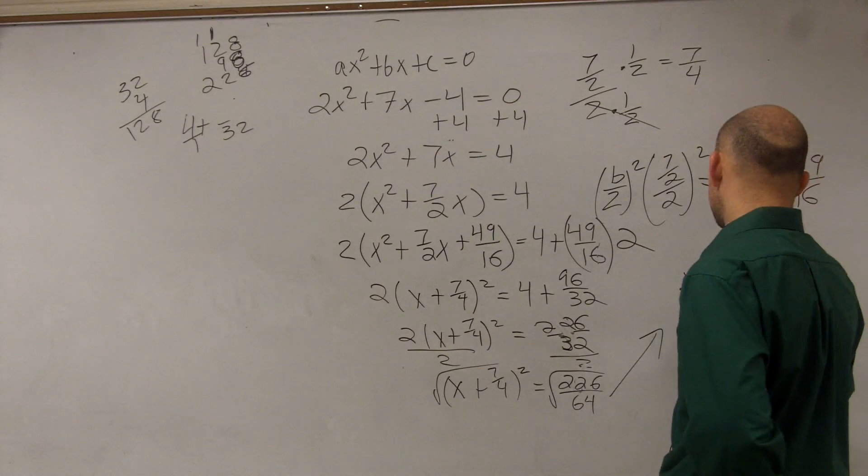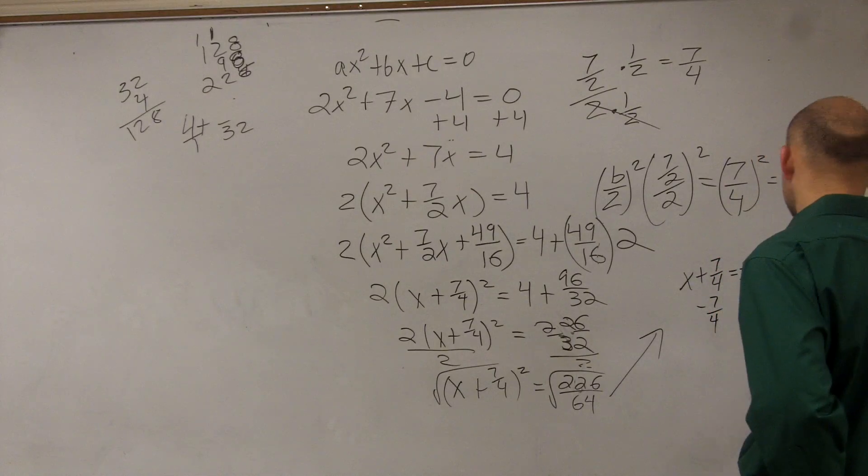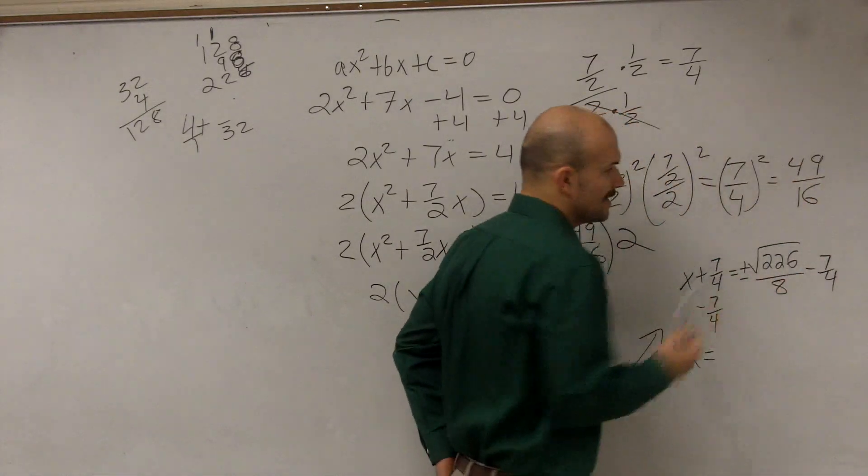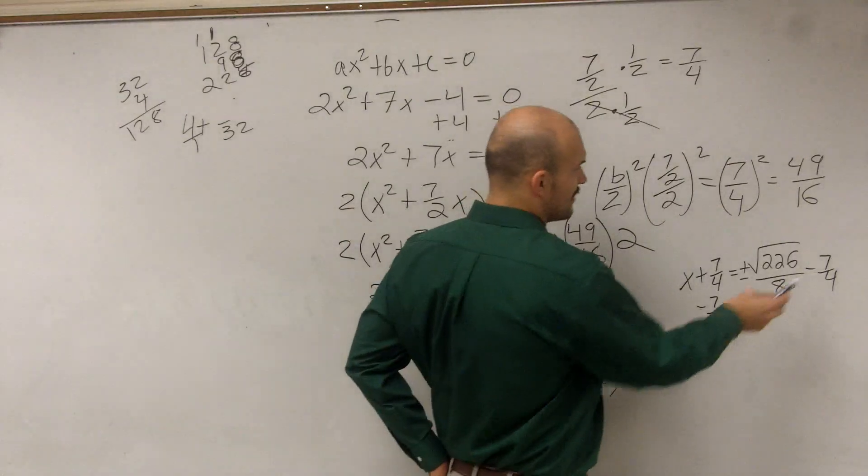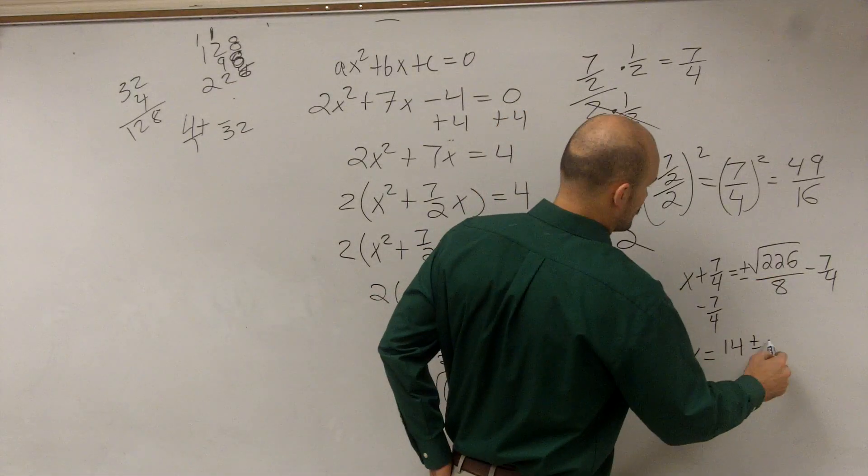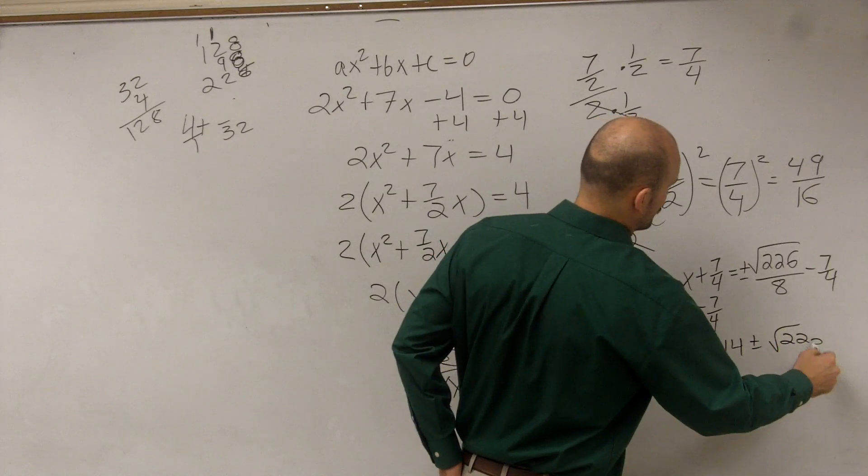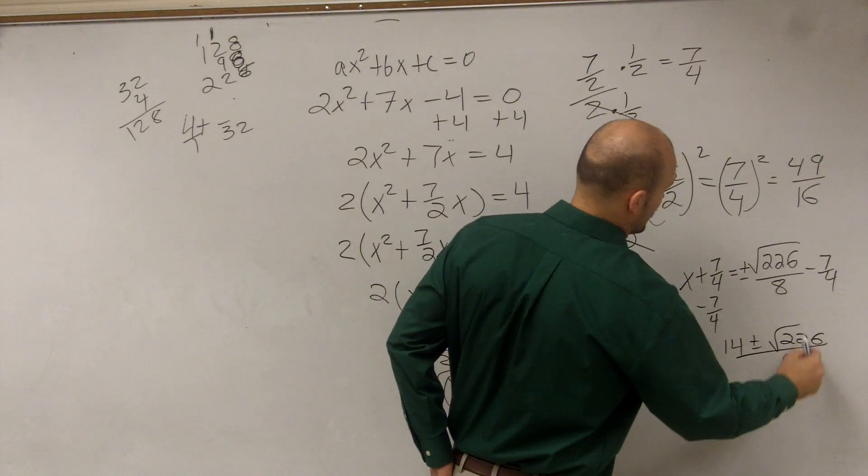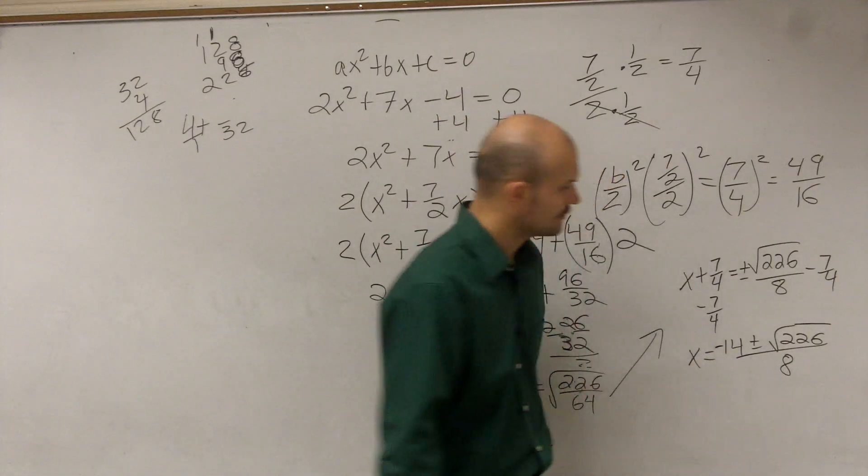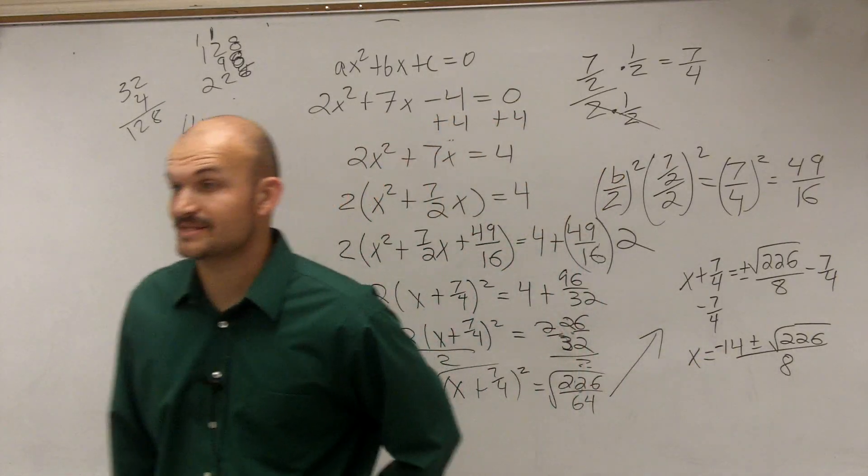Then, subtract 7 fourths. You can go ahead and double that. So you could have this as going to be minus 14 over 8 plus or minus the square root of 226 divided by 8. All right? It's a lot of work, isn't it? Yeah. That's a pretty lengthy one.